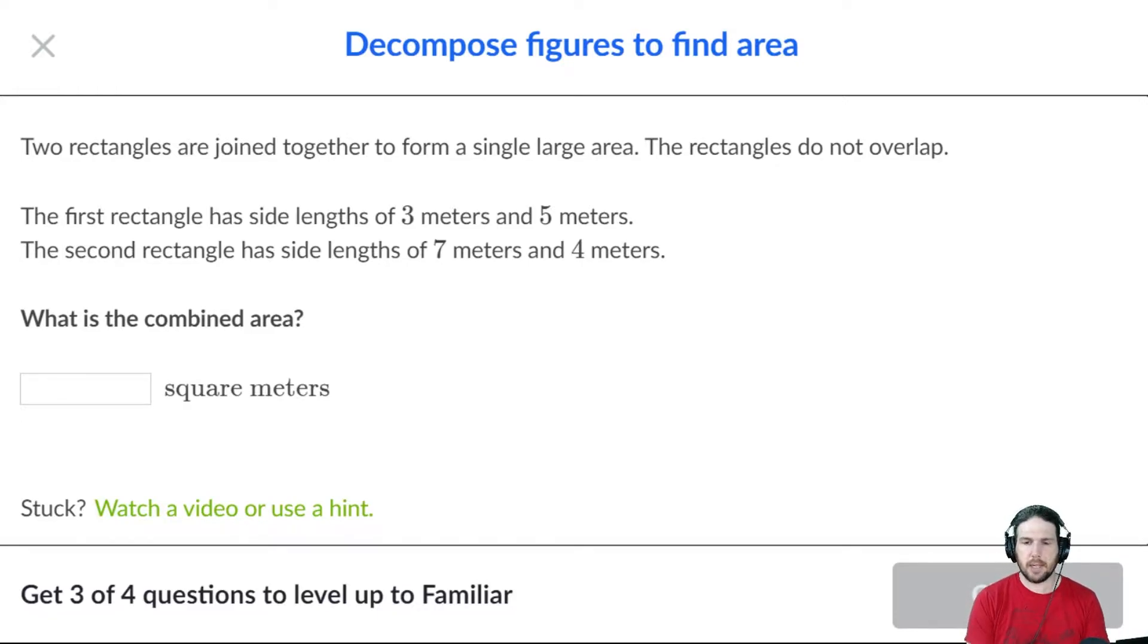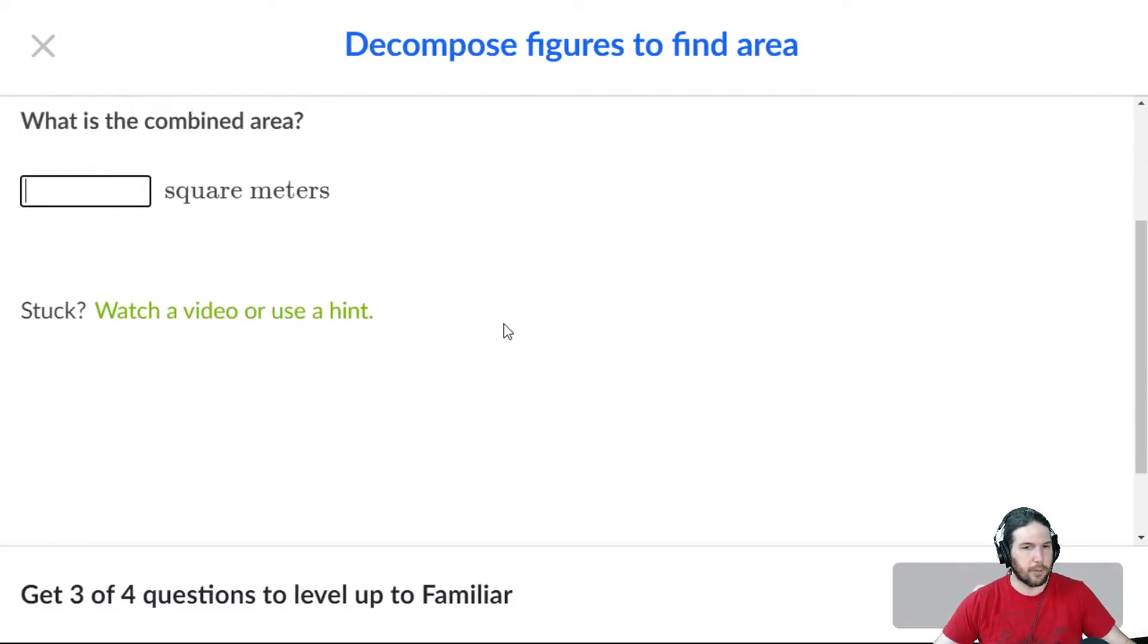So three by five is 15. The second rectangle is seven by four, which is 28. Seven times four. 15 and 28. Let's see. 15 and 30 would be 45 minus two would be 43. I think the combined area is 43 square meters.